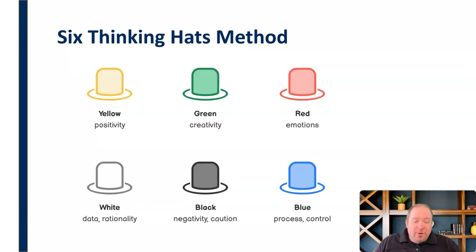You have the yellow hat, which is where everybody looks at the positive aspects and the positive potentials of this method and this solution. Green has to do with creativity—let's be creative and look at all the different creative angles here. Red is our emotional response to this possible solution.